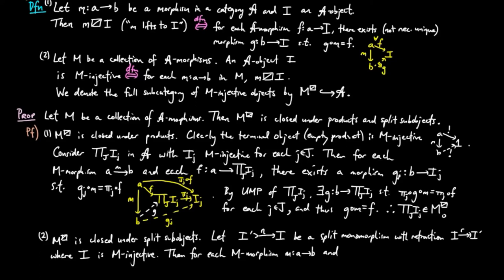Then, for each M-morphism M and A-morphism F from A to I', since I is M-injective, there exists a morphism G from B to I, such that NF equals GM.